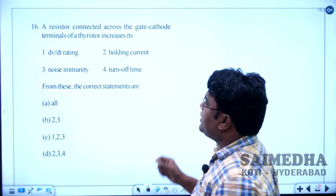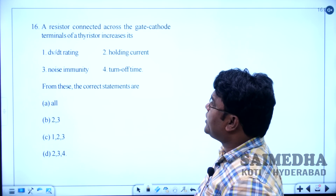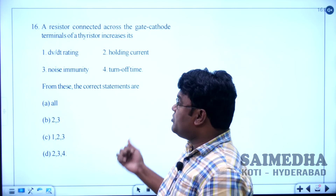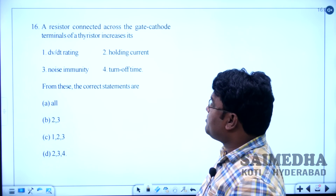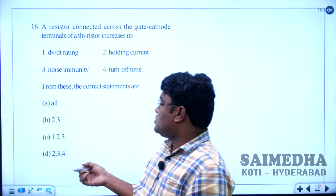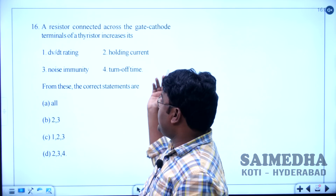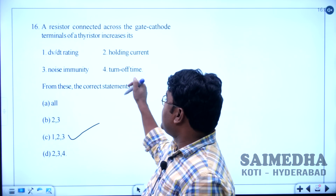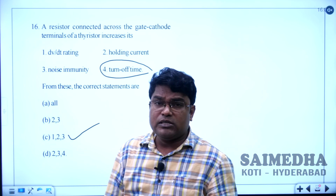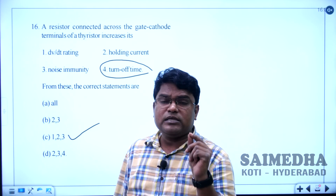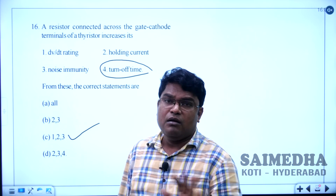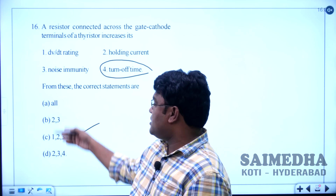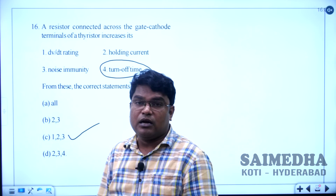Let us solve question number 16. A resistor connected across the gate-cathode terminal of the thyristor increases its dV/dt rating, holding current, and noise immunity. The gate is only related to the turn-on process, not the turn-off process. So all three statements — dV/dt rating, holding current, and noise immunity — are correct, and option C is the correct answer.